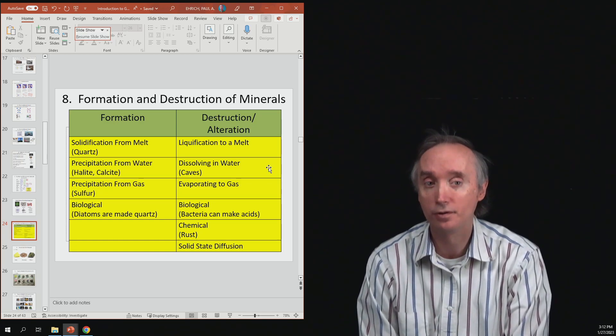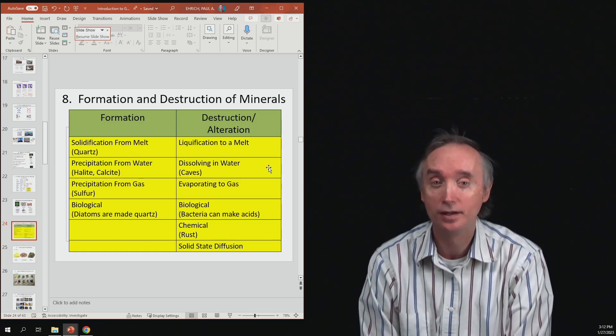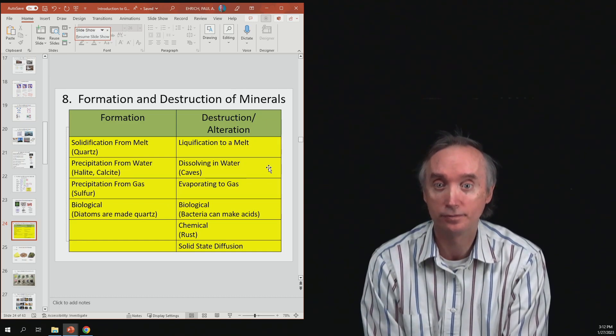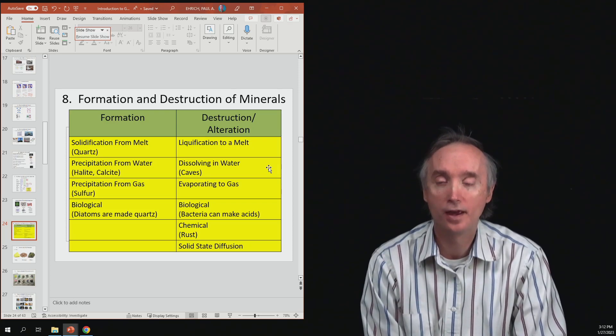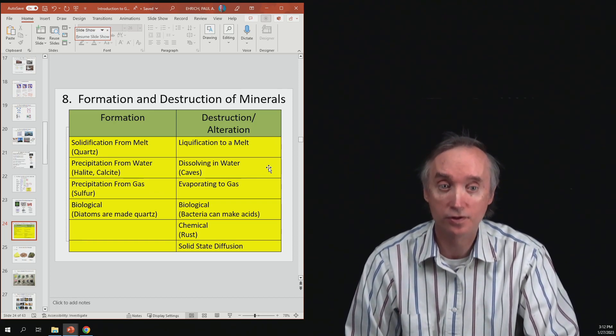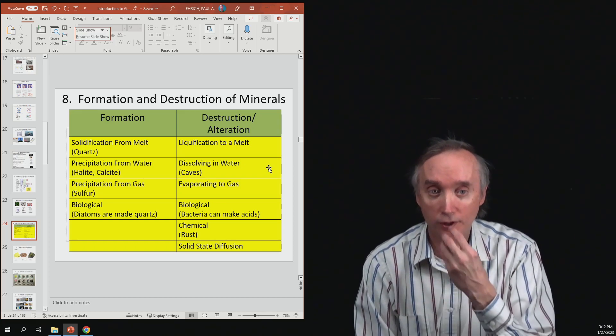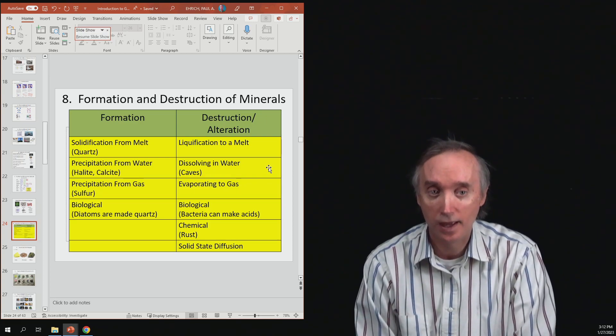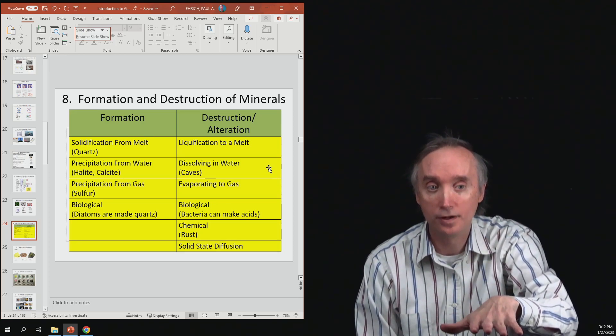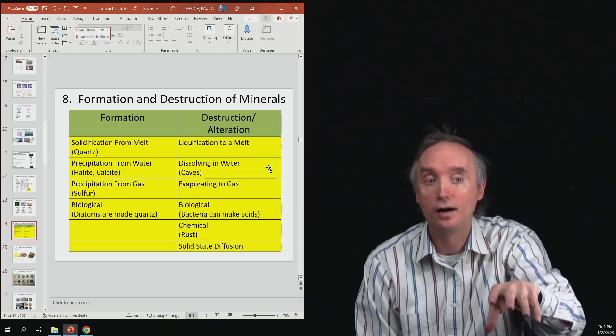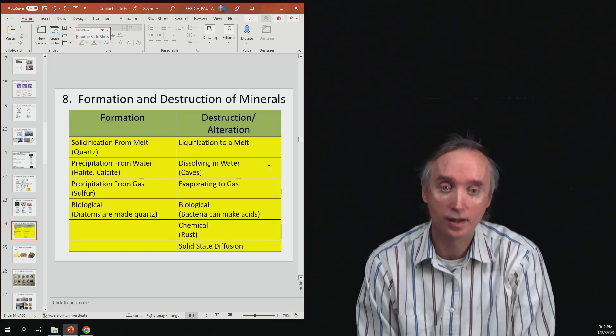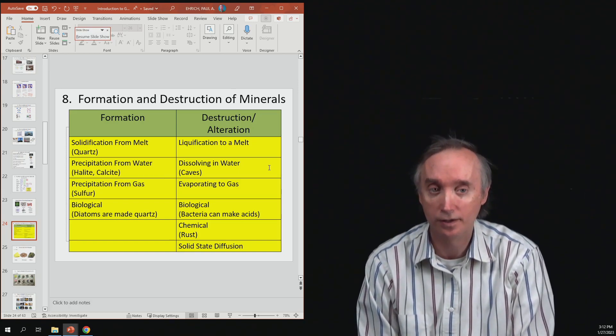So we can form minerals from a melt, and then we can destroy them if we heat them up too much. Okay, another way of making a mineral is through precipitation. So you can have a particular chemical substance that will precipitate when it's in water. So for example, carbon dioxide, what you breathe out, mixes with seawater, and it can make calcium carbonate, which then precipitates to the bottom of the ocean, and then can be cemented together to make limestone. So the mineral is calcite, and it is calcium carbonate, and it originates as carbon dioxide mixing with seawater.